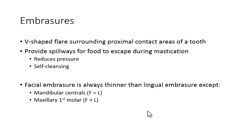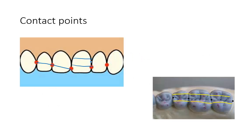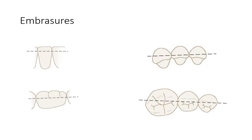Moving on to embrasures. An embrasure is a V-shaped flare surrounding proximal contact areas of the tooth. Everywhere you have a contact point, you're going to have this V-shape — those are embrasures. There are different types: an incisal embrasure is the V-shape formed at the incisal edge, and a cervical or gingival embrasure forms near the gingiva. You don't typically see the gingival embrasure as much because normally you have the interdental papilla there, and unless you have significant gum recession, it won't be visible.